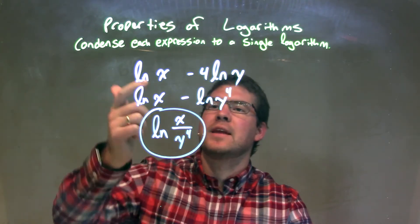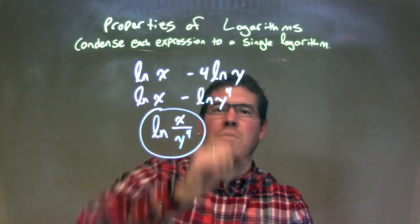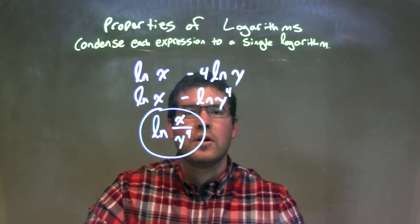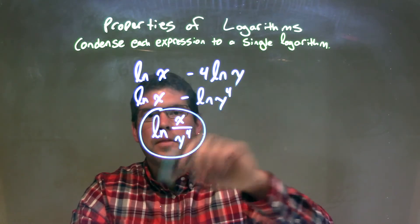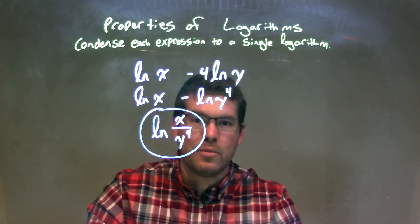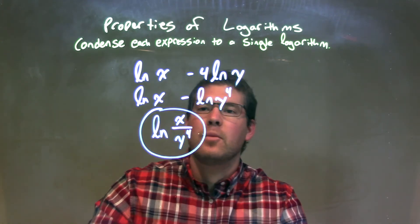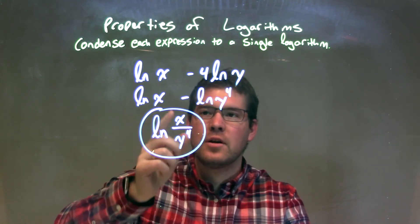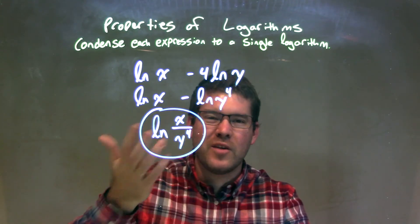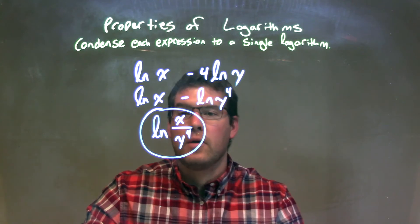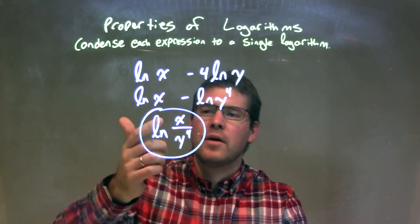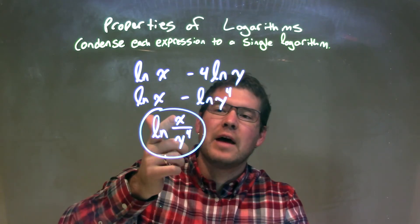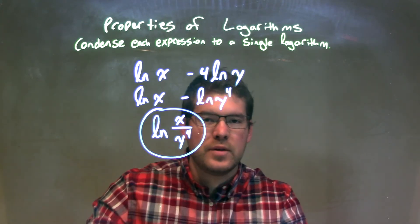So let's recap. We're given the natural log of x minus 4 natural log of y. The 4 out front of the natural log of y, I wrote it as the exponent of the y. It's one of our properties of logarithms. Then when we condense this, that subtraction separating two logarithms can become a division of the variables itself, or whatever we're taking the logs of. So we write this as one big logarithm, and we get the final answer. It's just the natural log of x divided by y to the 4th.